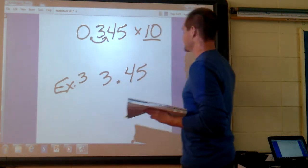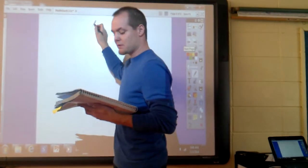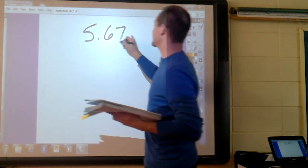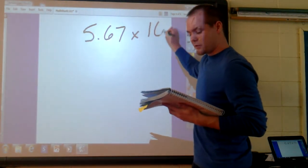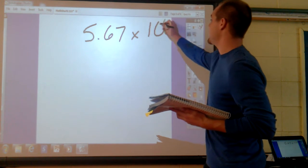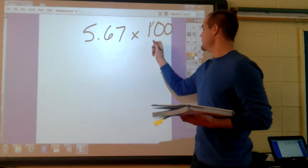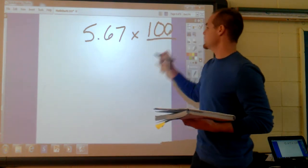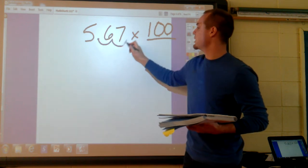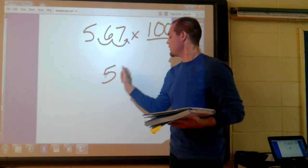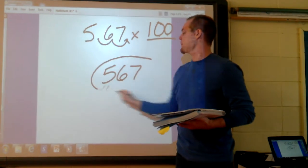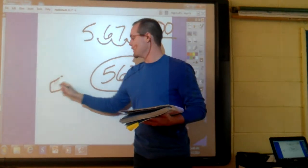And let's do one more. Example four. Let's go with practice problem G. I have 5 and 67 hundredths. And let's multiply it by 100. The number 100, two zeros, tells me to move my decimal point two places to the right. My answer is now 567. And we're writing that down for example four.